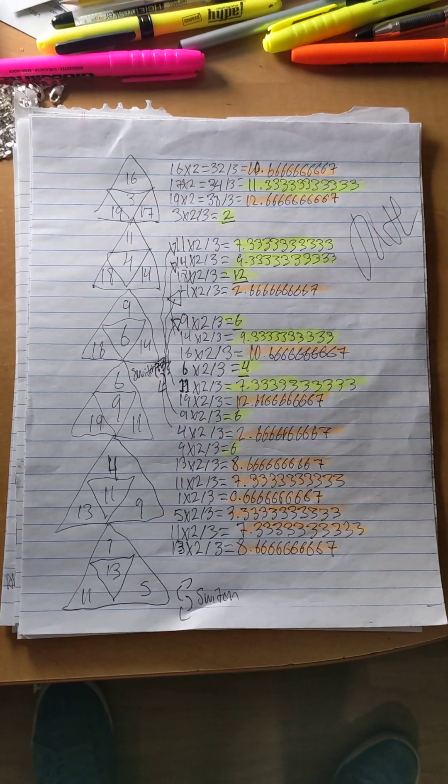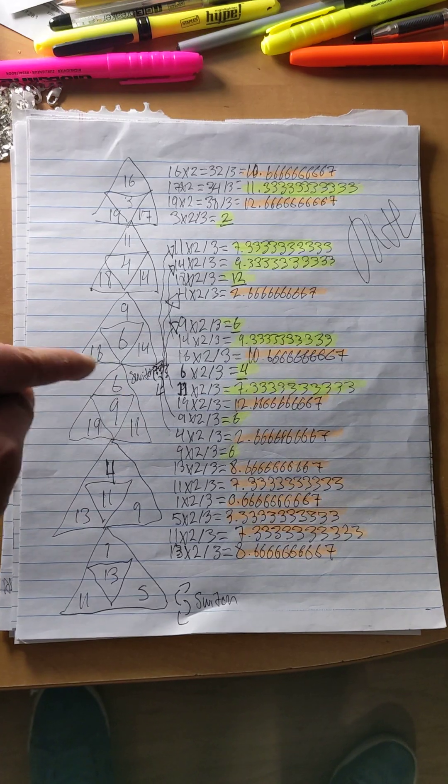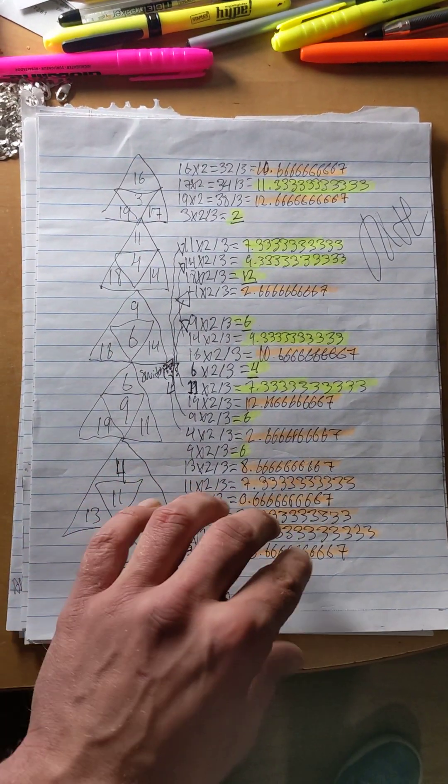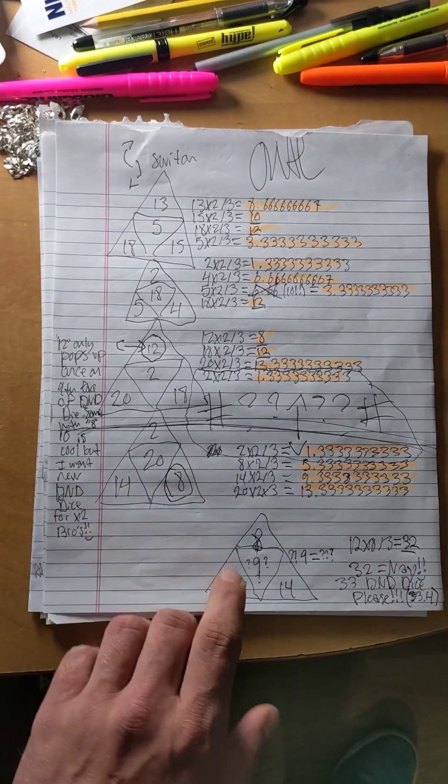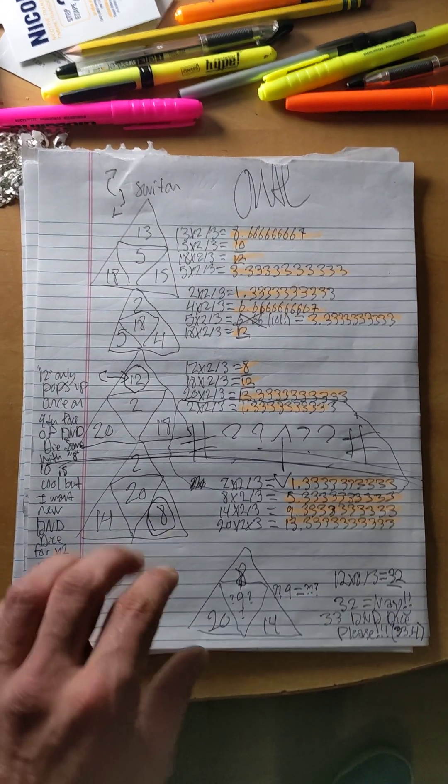This is D&D dice, man. I love D&D dice. It's kind of similar to my triangle equations. So I was like, fuck it. And look at all these sexy numbers, they're all similar. And then I'm like, wait a minute. I want a 33-sided D&D die.